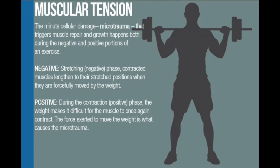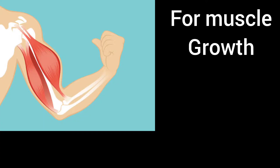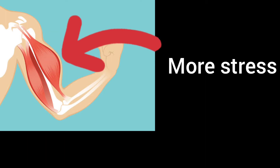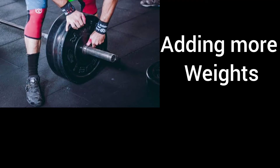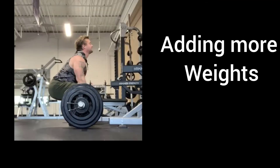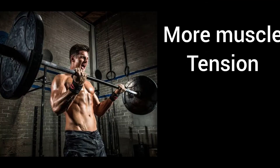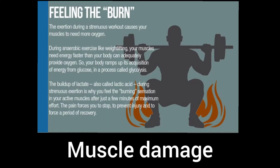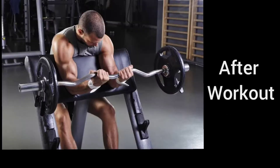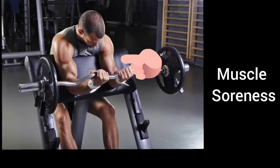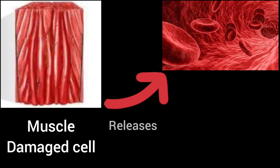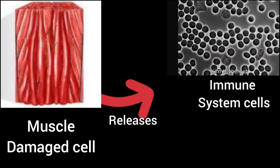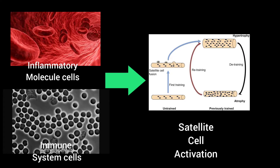Muscle Tension. When we start with muscle tension, it activates muscle growth overall. Satellite cells rely on immune cells and are activated through muscle tension to support muscle growth.